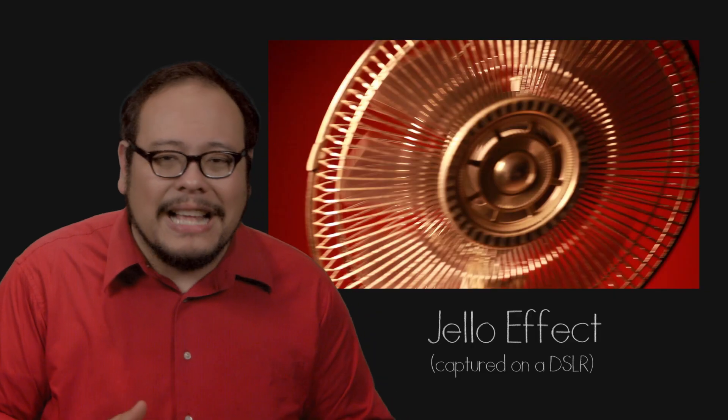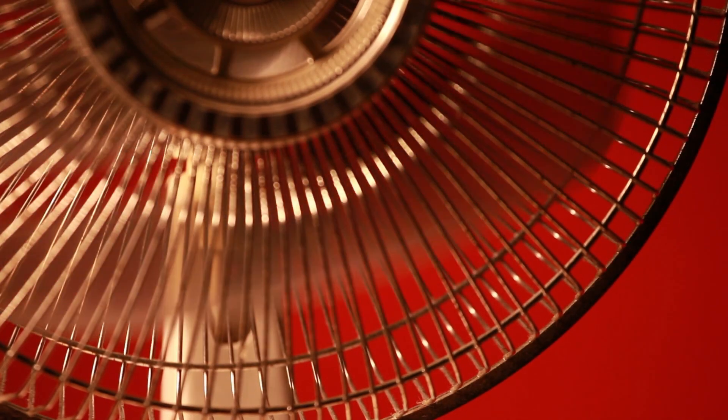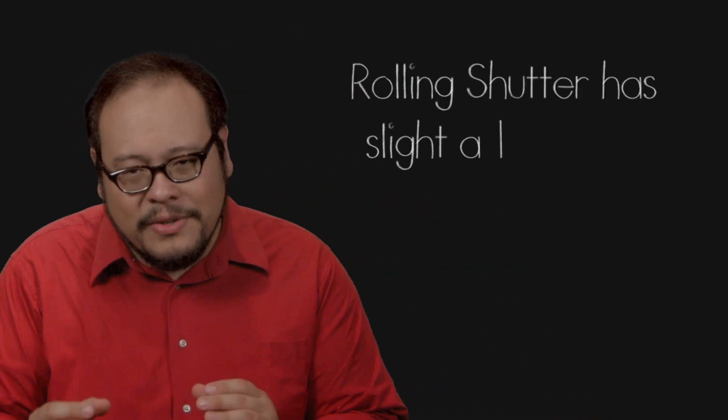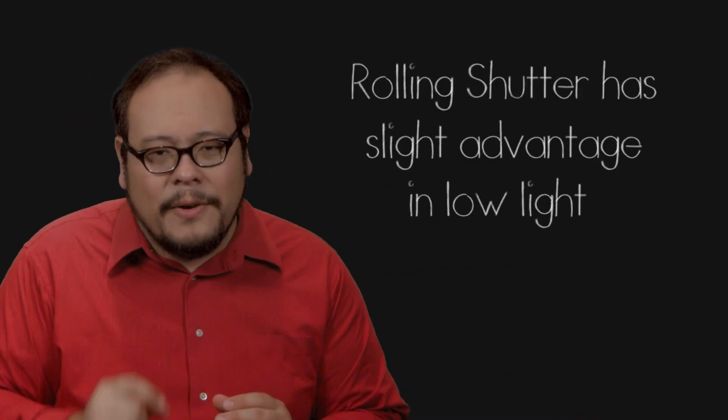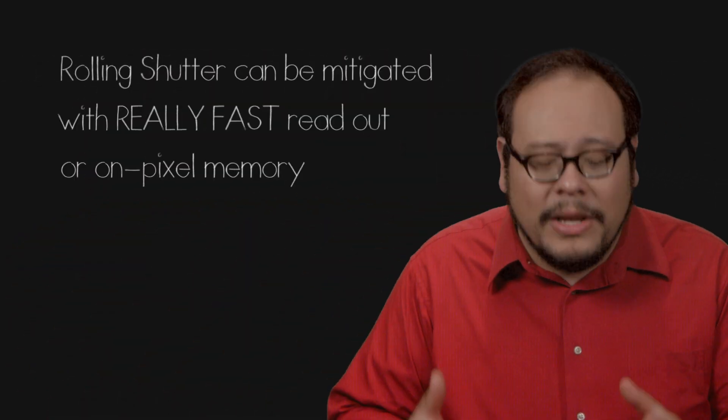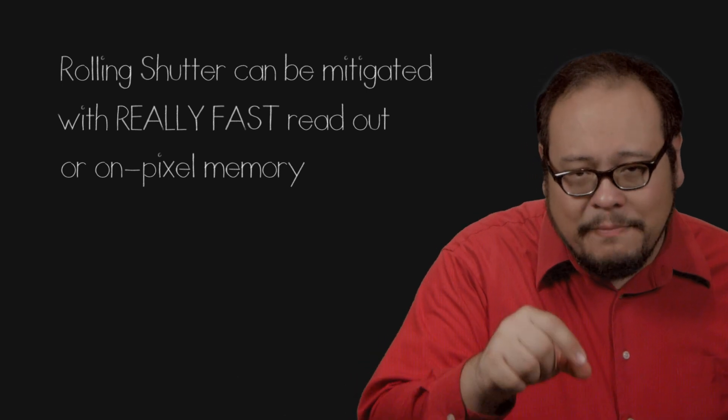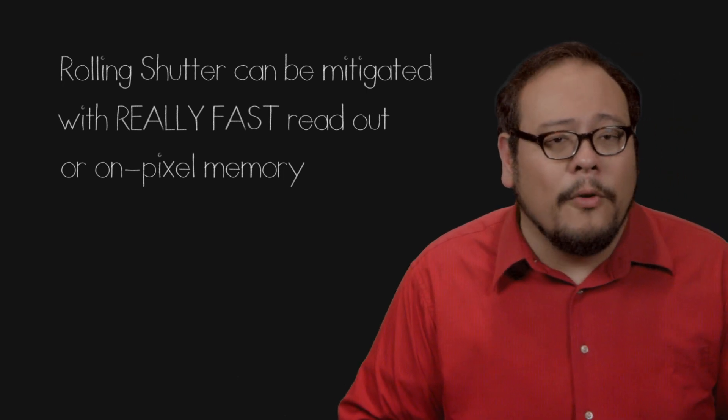This results in the jello effect where fast pans look crooked or strange patterns developing in fast moving objects. Rolling shutter isn't always necessarily bad. By reading lines at different times, you can give each pixel a little bit of extra time to capture photons, resulting in better low light performance. Rolling shutter can also be mitigated with really fast readouts or by including a bit of memory on each pixel that stores the voltage before being read out.